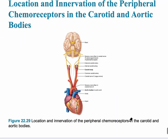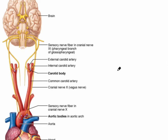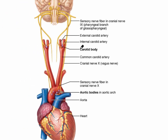The next slide shows the location and innervation of the peripheral receptors. There are chemoreceptors located in the carotid blood vessel — the carotid body — as well as the aortic body, similar to what we learned for blood pressure. These receptors are in a unique location where they can sense the amount of hydrogen in the blood, which represents the amount of carbon dioxide, and adjust accordingly.